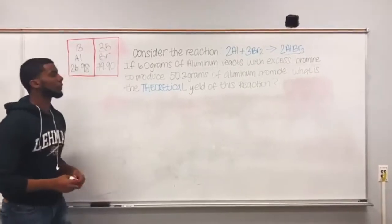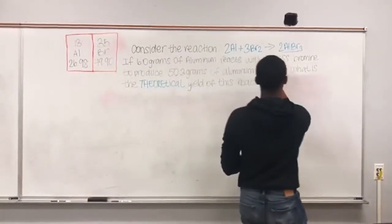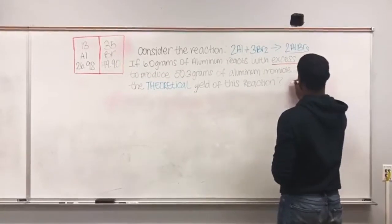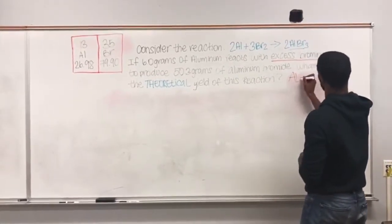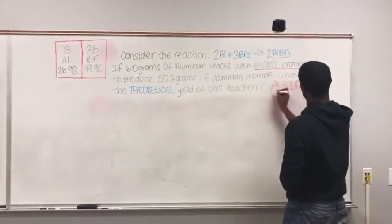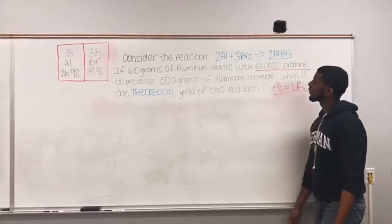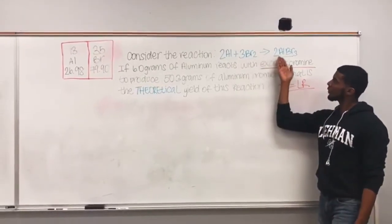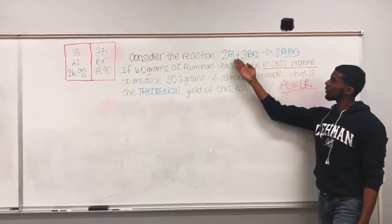We know that bromine is the excess reagent, which means aluminum is the limiting reagent. Since aluminum is our limiting reagent, the amount of AlBr3 produced is related to aluminum.